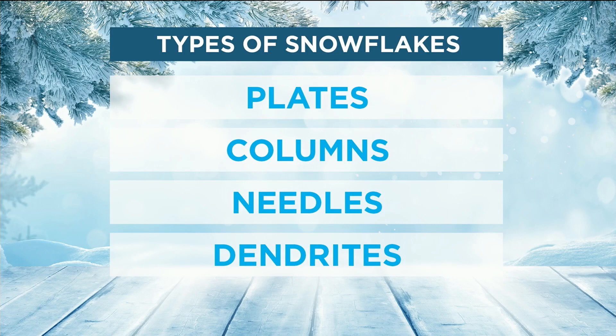So let's talk about those four main types. We've got plates, we have columns, we have needles, and we have dendrites. Four main categories.